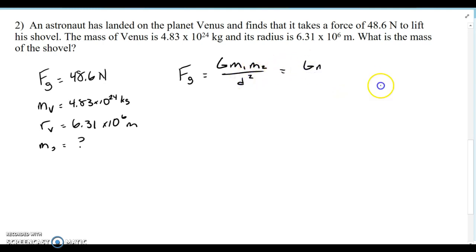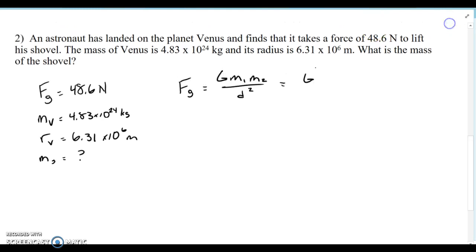In this case, that would be big G, the mass of Saturn creating the field—sorry, Venus. The mass of Venus and the mass of the shovel over the radius of Venus squared.